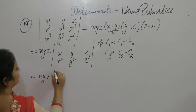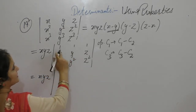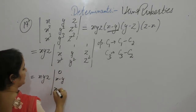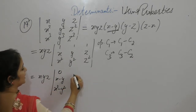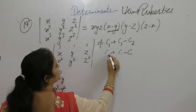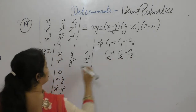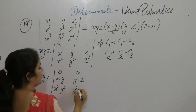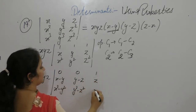We operate on C1 as C1 minus C2 and on C2 as C2 minus C3. This gives: row entries 1 minus 1, x minus y, x squared minus y squared in C1; and 1 minus 1, y minus z, y squared minus z squared in C2.